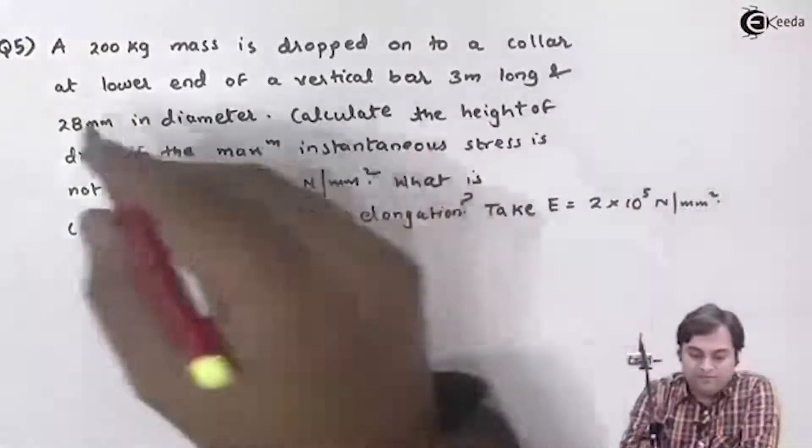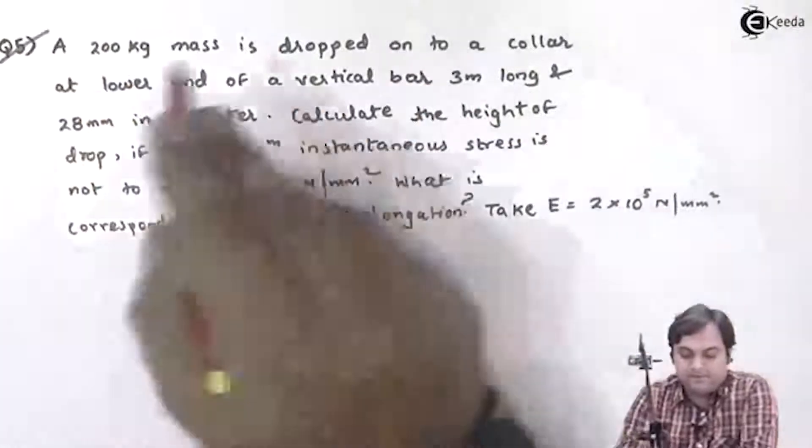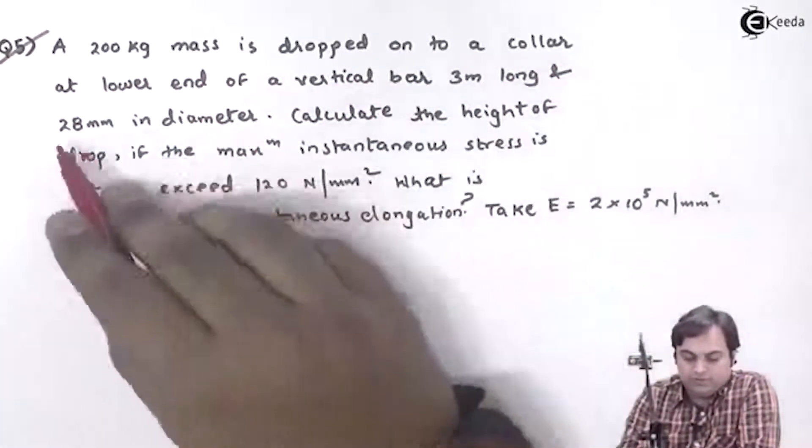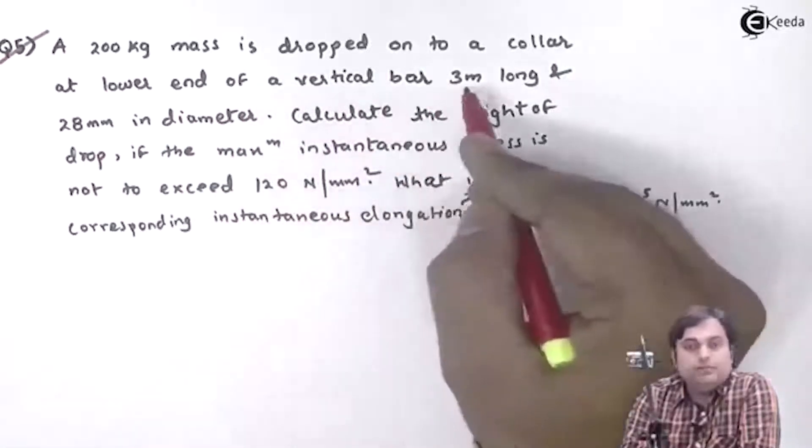Now let us take question number 5. A 200 kg mass is dropped onto a collar at the lower end of a vertical bar.